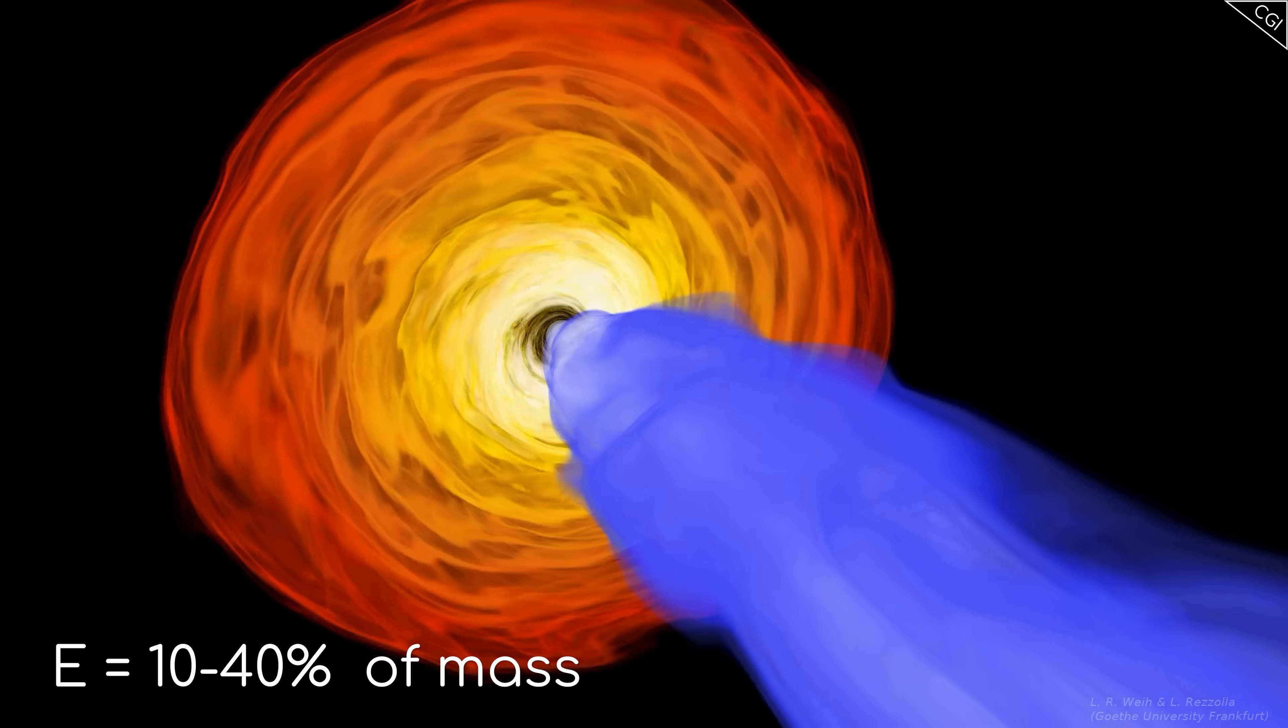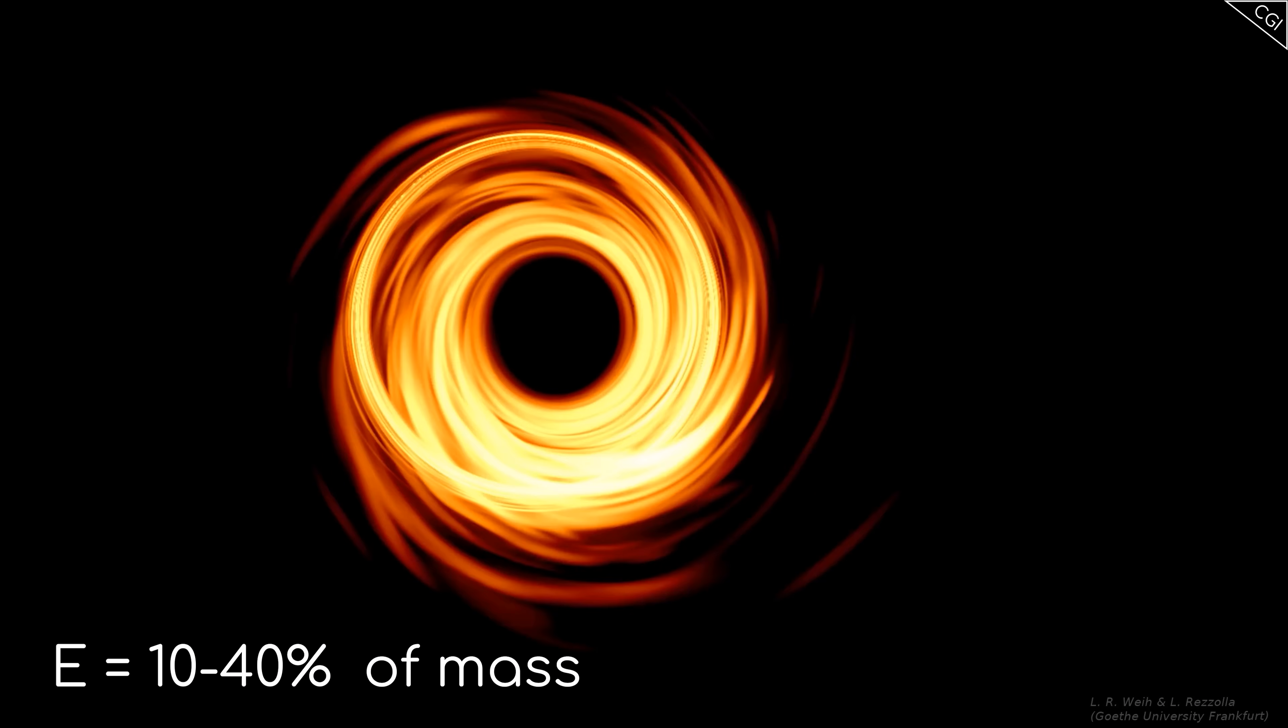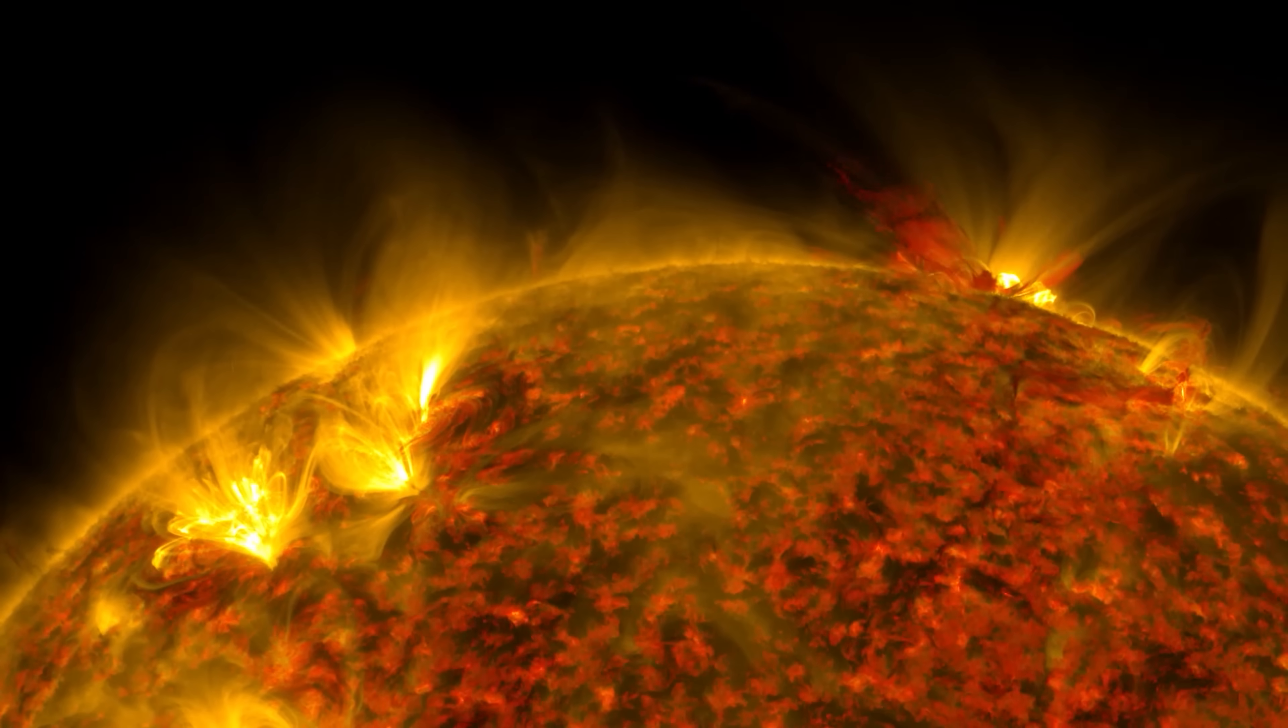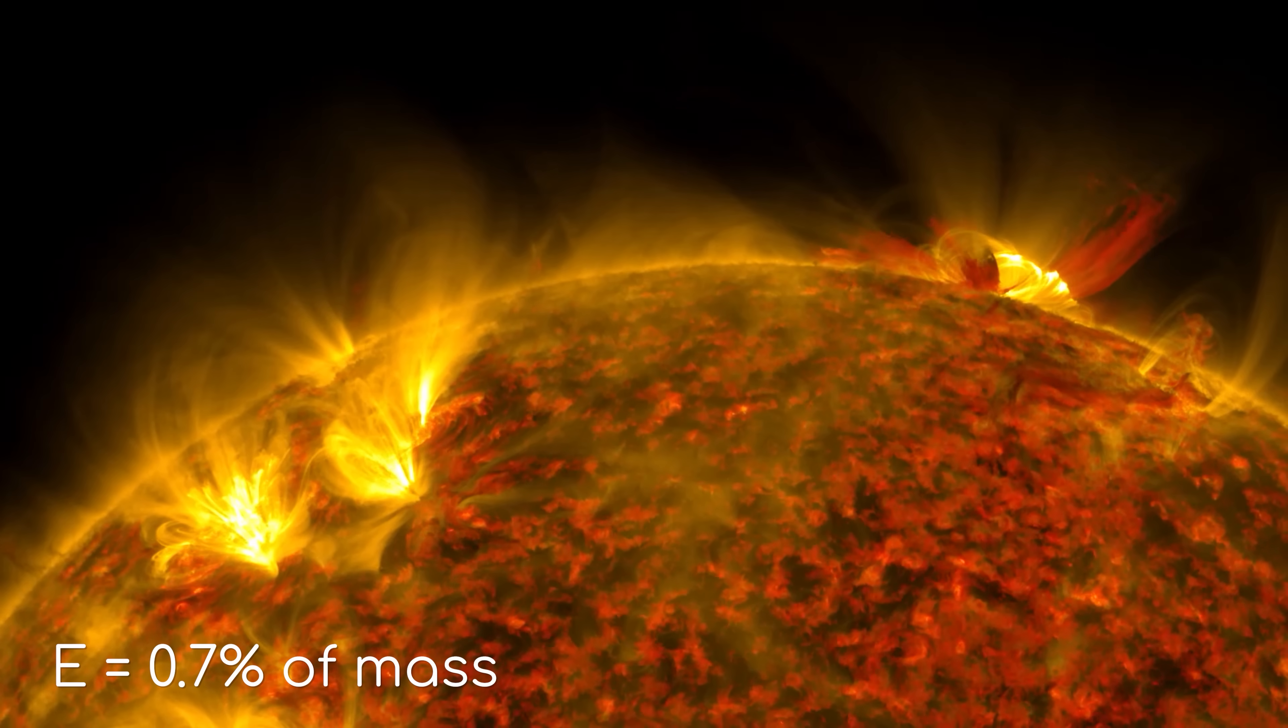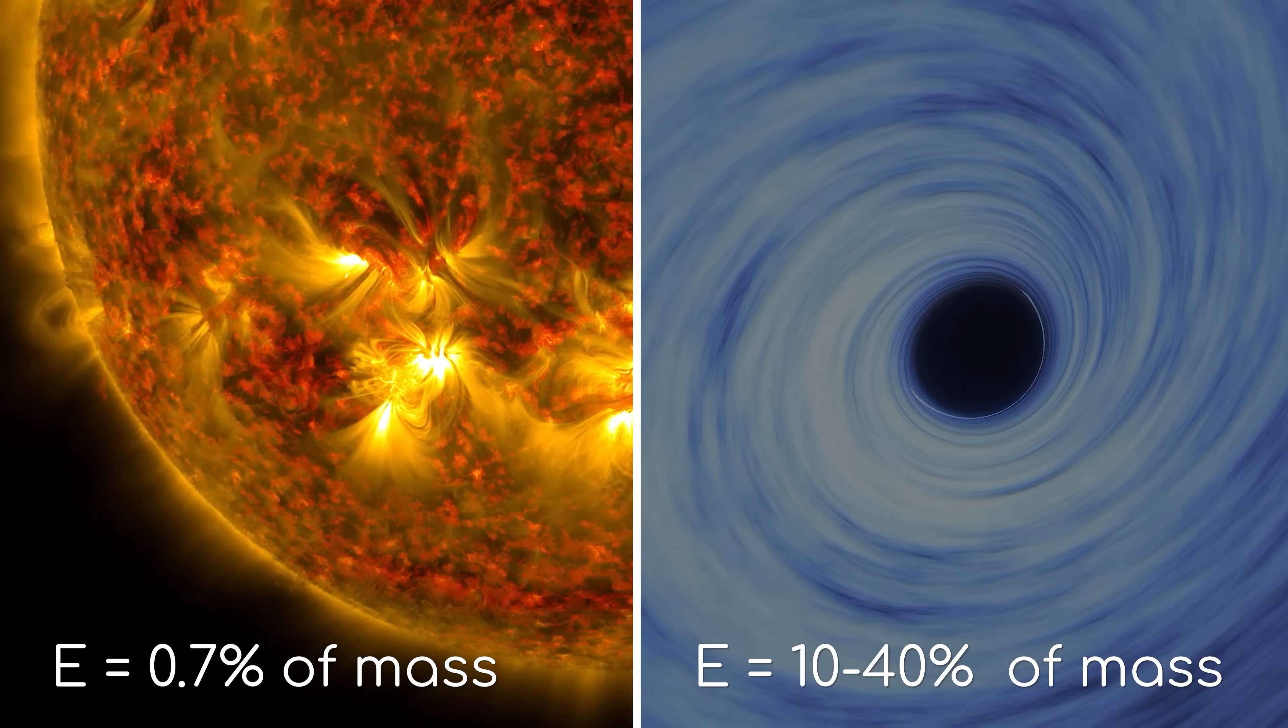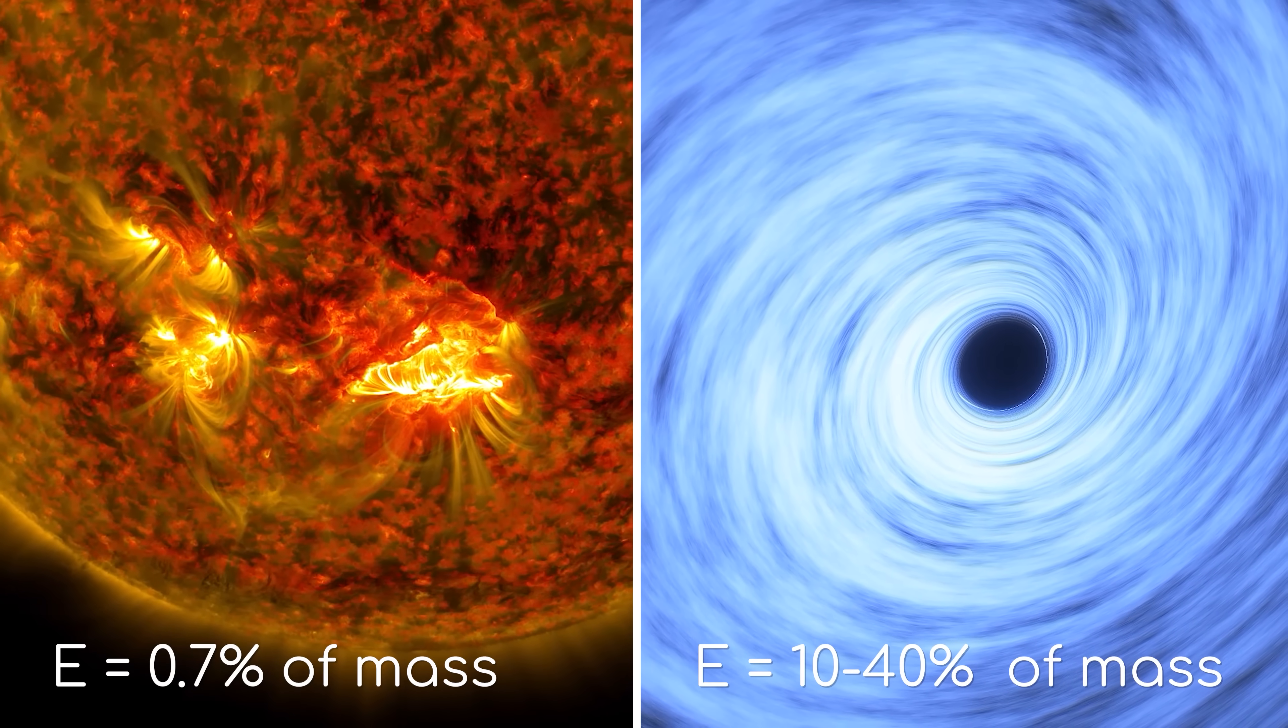Between 10 and 40% of an atom's mass is given off this way in the form of energy, which then radiates out across the universe. For point of comparison, nuclear fusion, the process taking place in the Sun, converts only about 0.7% of mass into energy. Let that sink in for a moment. Consider how bright the Sun is, at 0.7%. How bright can a black hole's accretion disk get?